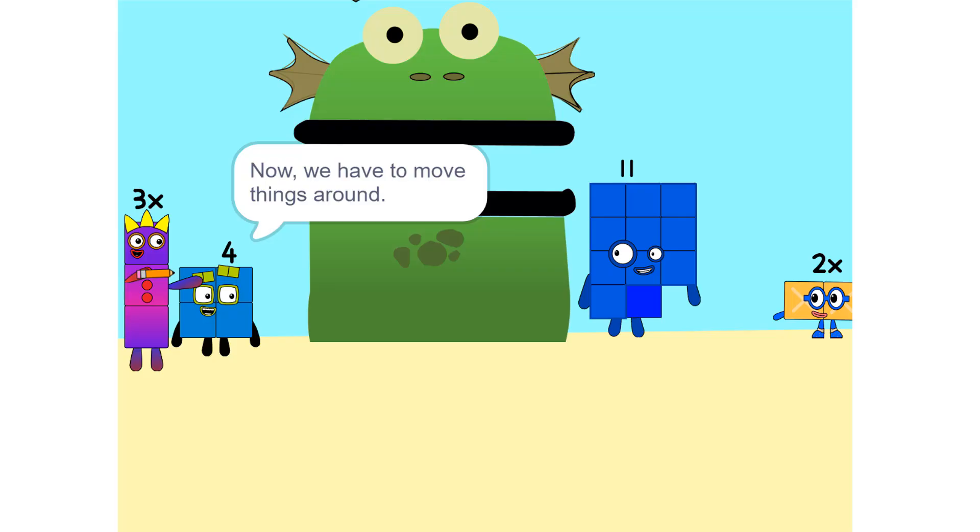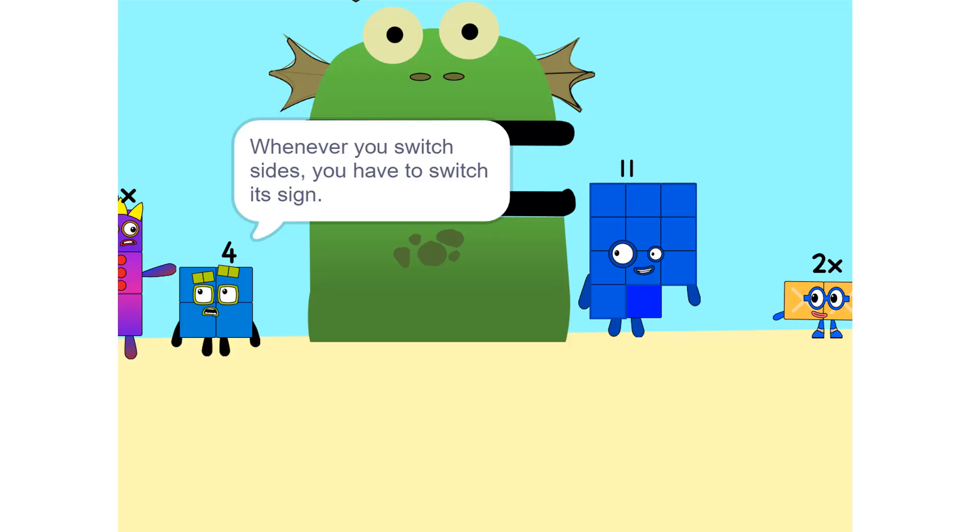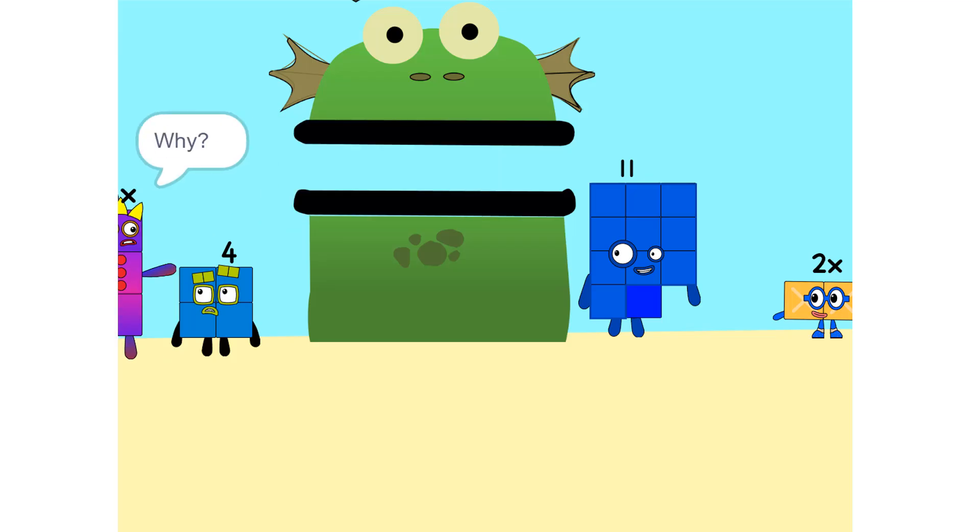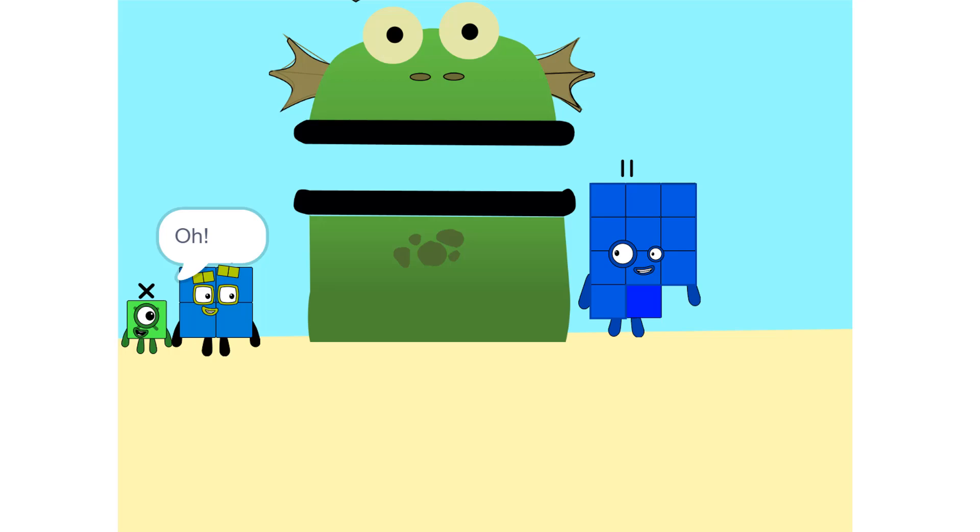Now we have to move things around. We have to move this 2x to this side. Oh, so 5x? No. Whenever you switch sides, you have to switch its sign, so if it's positive it becomes negative and vice versa. Why? Think of it this way: you're subtracting 2x from each side. Oh, so it'd just be 1x or x. Correct.